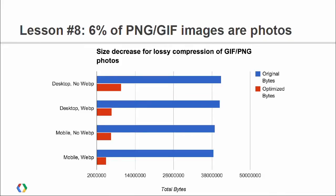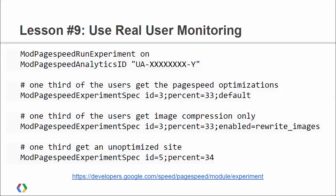This is all totally automated and all you have to do is push a button to get it. Lesson number nine: use real user monitoring. It's great to use WebPageTest to see actual data, but until you see what your users are doing, you don't really know. In ModPageSpeed you can set up experiments to say 30% of your traffic goes to this set of optimizations and 70% is configured a different way, so you can see what's going on in the real world.